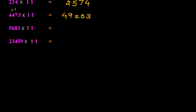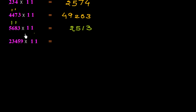For the next example, we write 3 as it is, then 8 plus 3 is 11, put 1 and carry 1. Then 6 plus 8 is 14, plus 1 is 15, put 5 and carry 1. Then 5 plus 6 is 11, plus 1 is 12, put 2 and carry 1. Then 5 plus 1 is 6, so the answer is 62513.